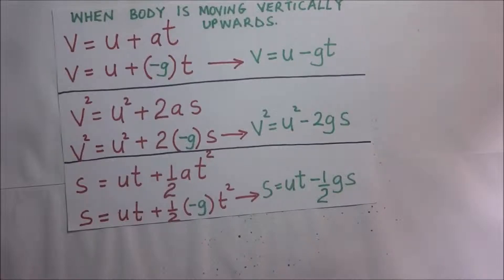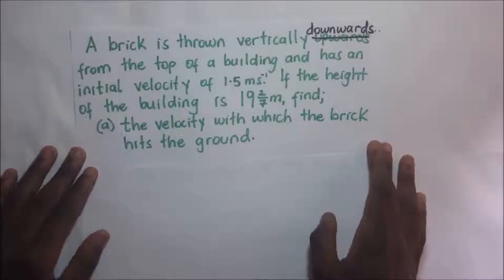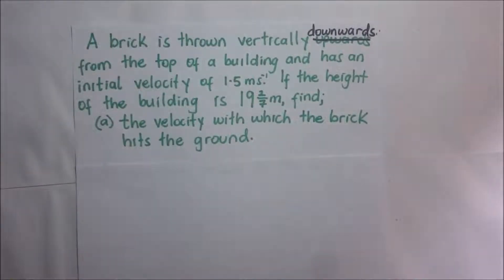So we are going to do some worked examples to illustrate how these work. We have a question right here. A brick is thrown vertically downwards from the top of a building and it has an initial velocity of 1.5 meters per second. If the height of the building is that, find the velocity with which the brick hits the ground. As usual, we first summarize the question.